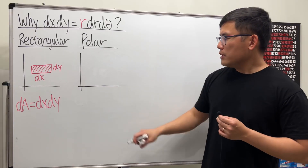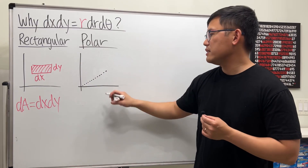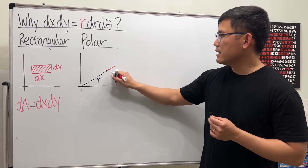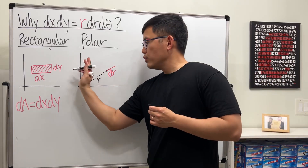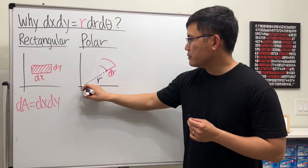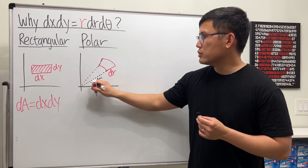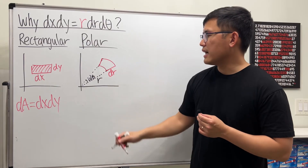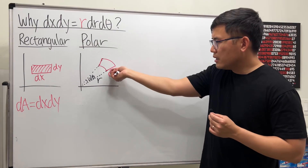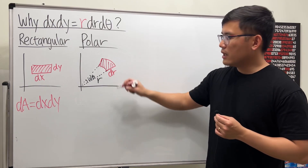Now let's take a look at the polar case. We have a point, and first we need to know the radius r from the origin to that point. Then we extend it a little bit — that extension is dr. We rotate it through a small angle dθ. This is meant to be a very tiny change in angle, likewise dr is a very tiny extension.